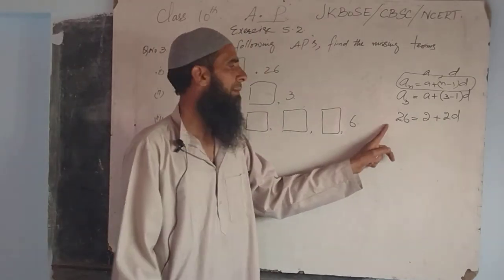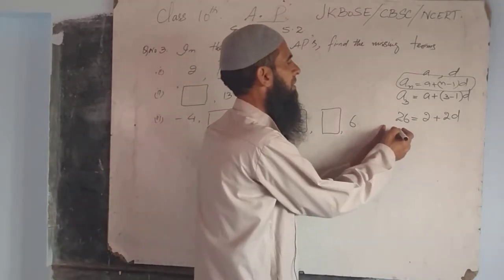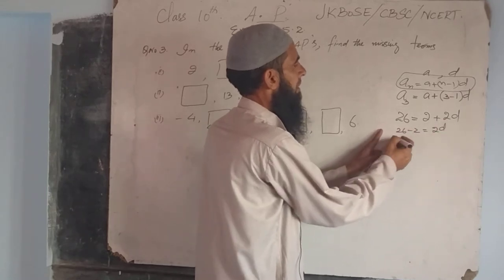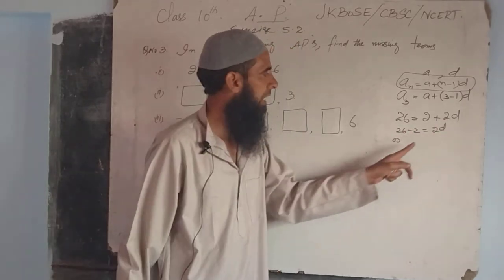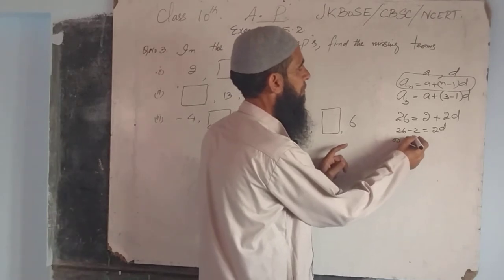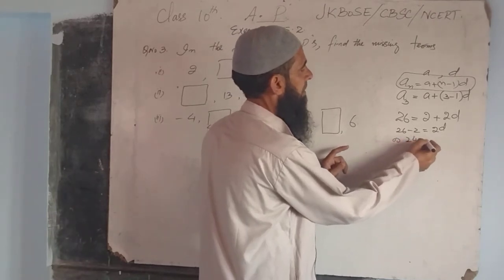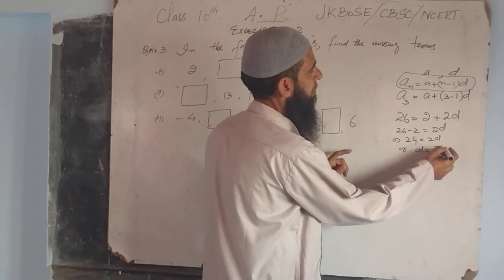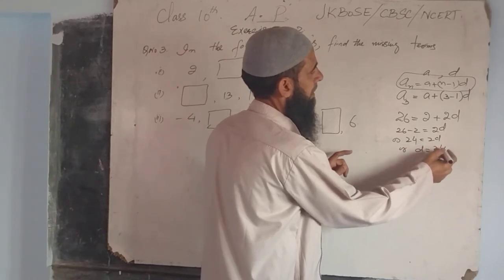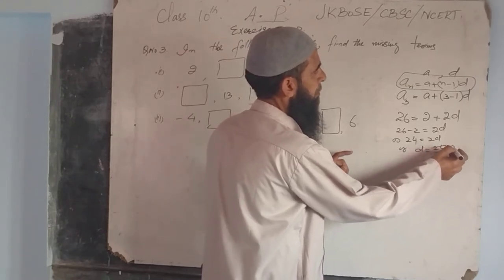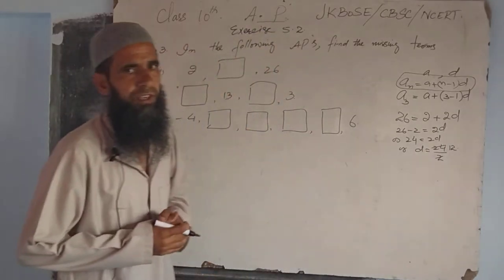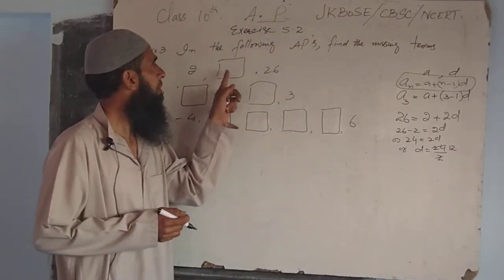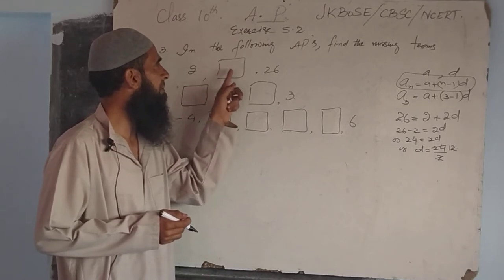From the left side: 26 minus 2 equals 2D. That gives us 24 equals 2D, so D equals 24 over 2. Therefore D equals 12.